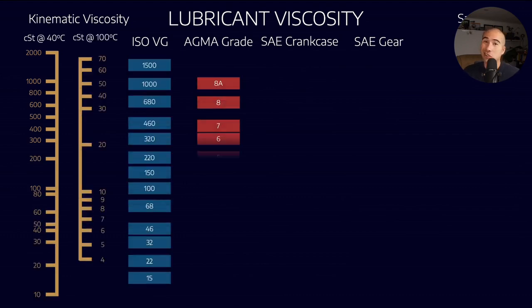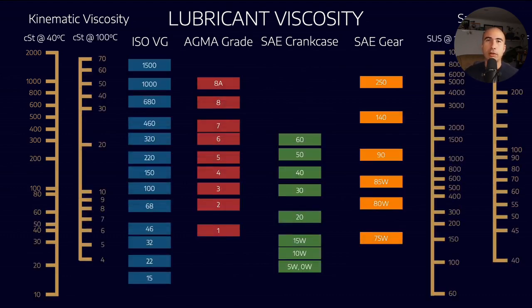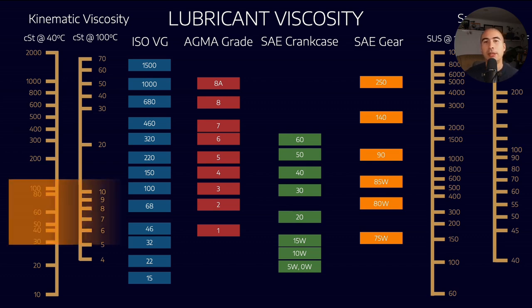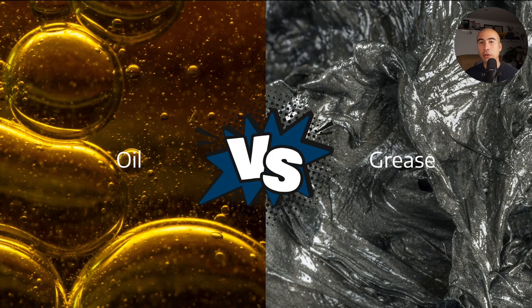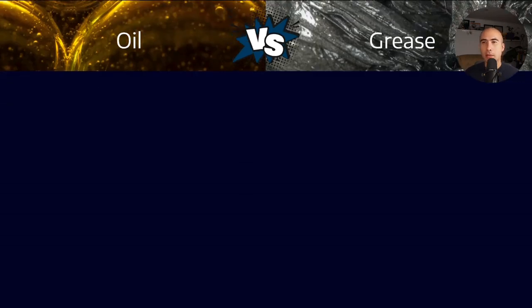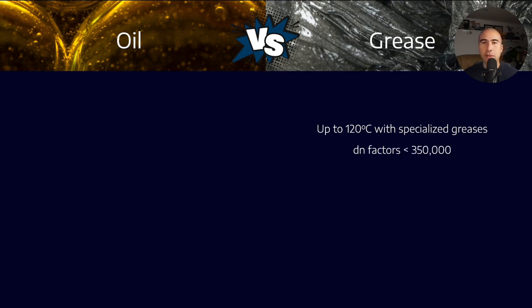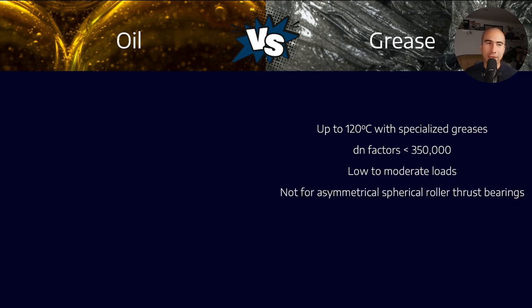In practice, the OEM will probably define what lubricant viscosity to use. It's rare unless you're in the design phase that you'd define it. Typical viscosity for rolling element bearings is between 32 and 100 most of the time. Next, determine whether to lubricate with oil or grease. With grease, we can go up to 120 degrees Celsius with specialized greases. DN factors are typically limited to 350,000. Grease is used for low to moderate loads like electric motor bearings.